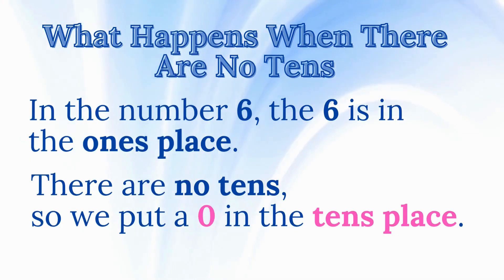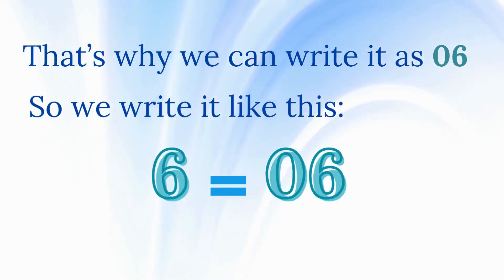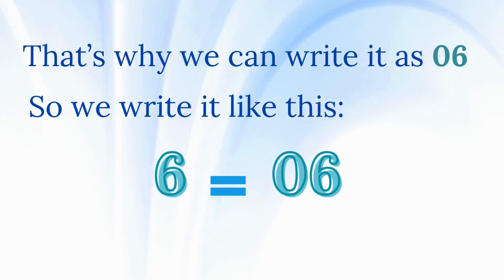What happens when there are no 10s? In the number 6, the 6 is in the 1s place. There are no 10s, so we put a 0 in the 10s place. That's why we can write it as 06, so we write it like 6 equals 06. You're doing great.